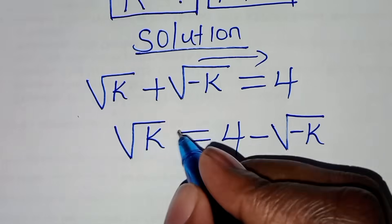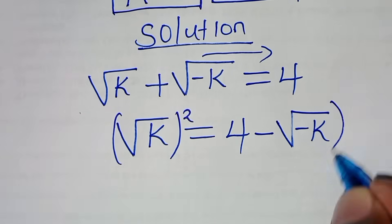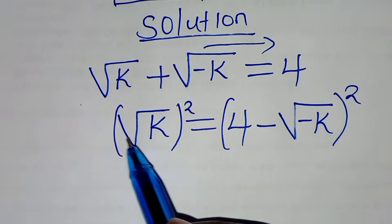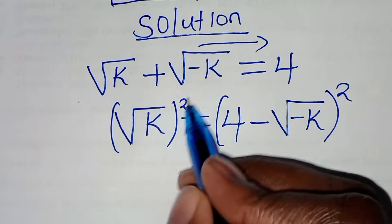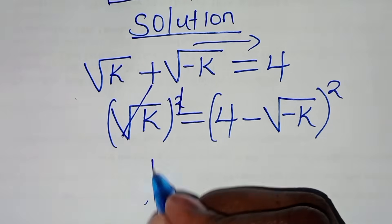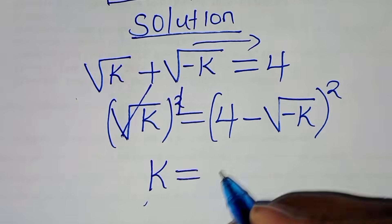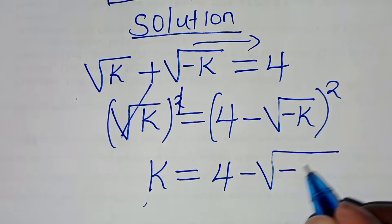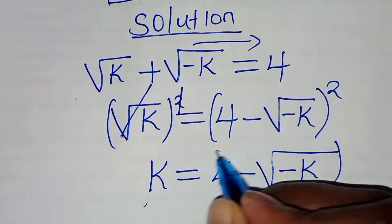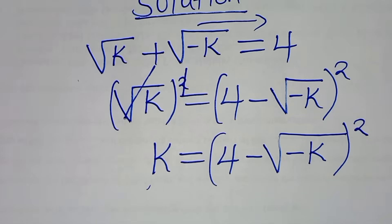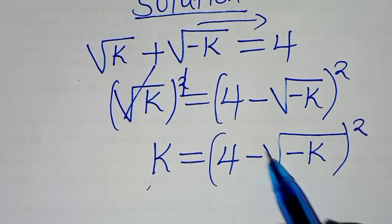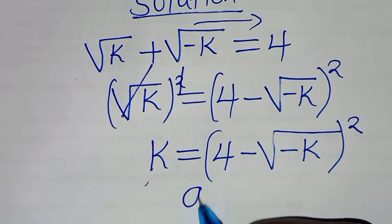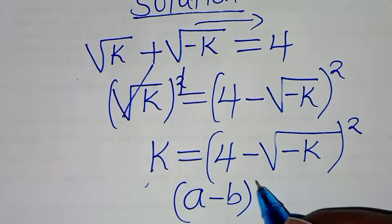So let's square both sides from here, so that here we have square root of k raised to the power of 2, this implies we eliminate the square root sign, so that k is equal to 4 minus square root of minus k raised to the power of 2. This part, 4 minus square root of minus k raised to the power of 2, is in the form of a minus b squared.